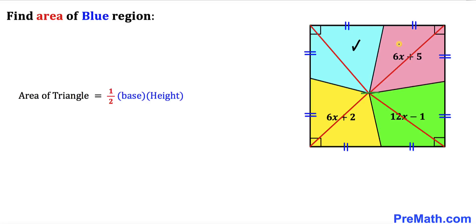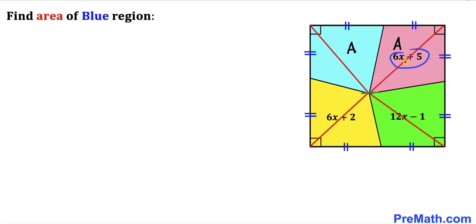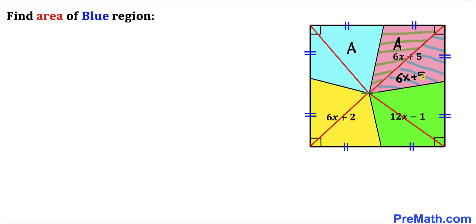Therefore we conclude that the area of this triangle equals the area of this triangle. Suppose the area of the blue triangle is a, then the area of the pink triangle is a as well. The pink region area is 6x plus 5, so the area of the remaining triangle part is 6x plus 5 minus a.